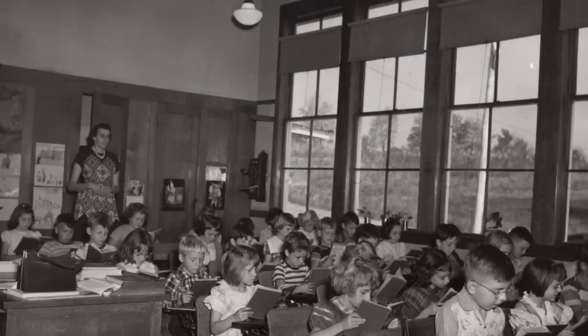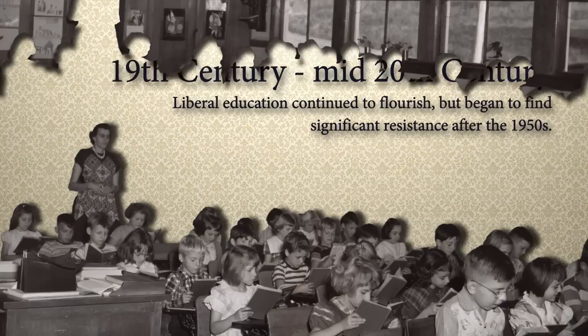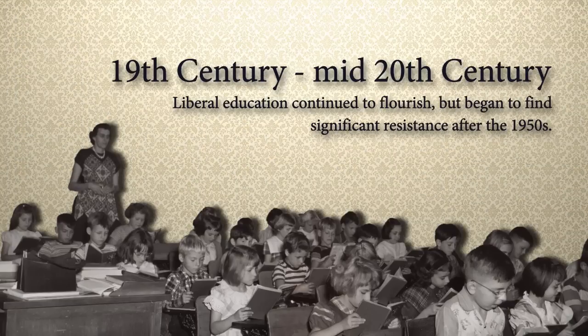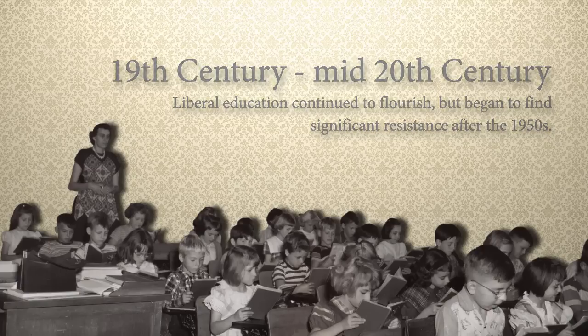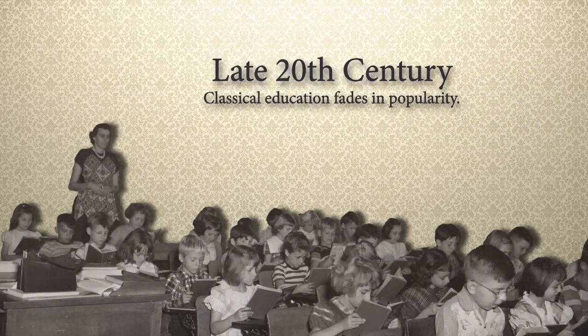Through the 19th century and into the mid-20th century, a typical liberal education at the primary and secondary level in the U.S. embraced the study of classic literature, great books, writing, composition, and languages, as well as core knowledge of history, science, math, and English. By the mid-20th century, classic liberal education was being met with significant resistance, and by the late 20th century, it had all but faded away in popularity.